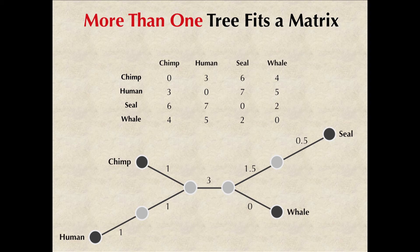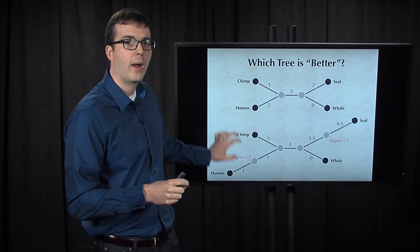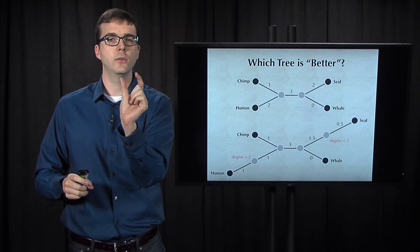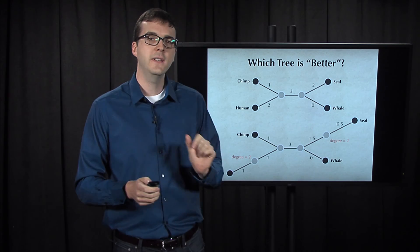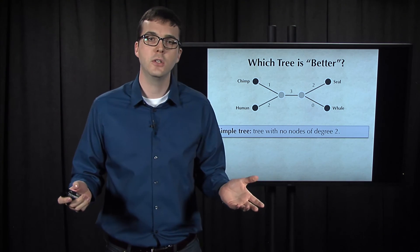But I would say that when you look at these two trees, the top one just seems nicer, right? Of course, we need to rigorously define what we mean by nicer. The bottom tree has two nodes of degree two, so we can get the graph on the top from the graph on the bottom by simply compressing all paths that contain degree two nodes. This leads us to define a simple tree as a tree that has no nodes of degree two.